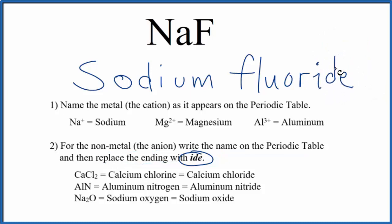If you're given sodium fluoride and asked to write the formula, sodium has a 1+ ionic charge and fluorine has a 1−. So you can see we only need one sodium to balance the negative charge on the fluorine.